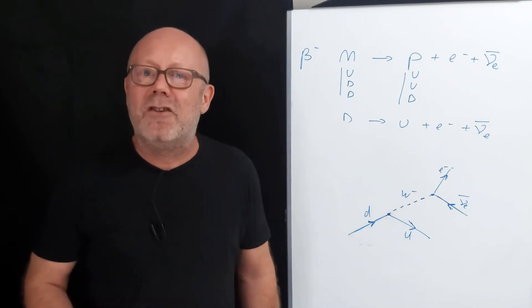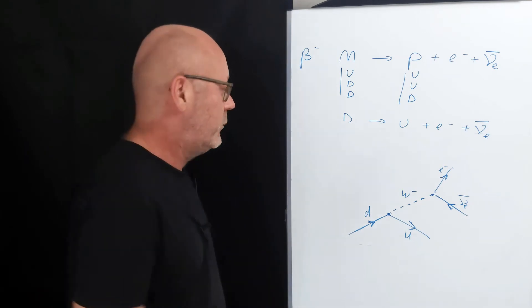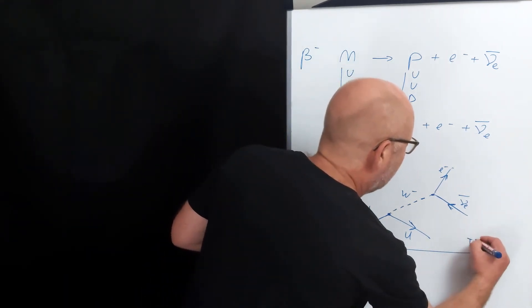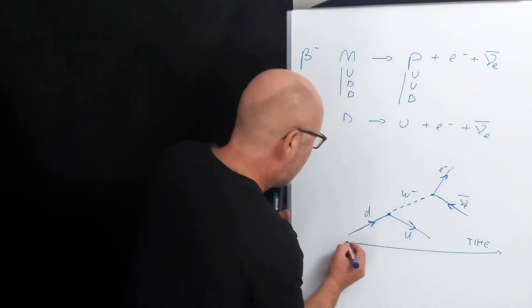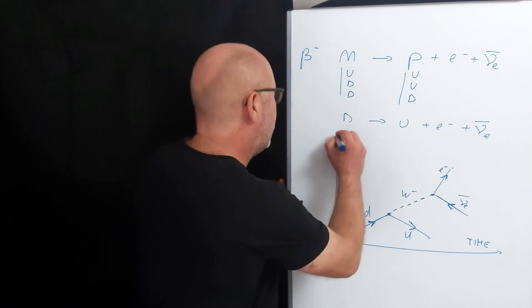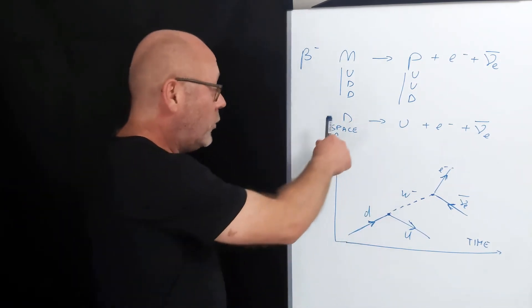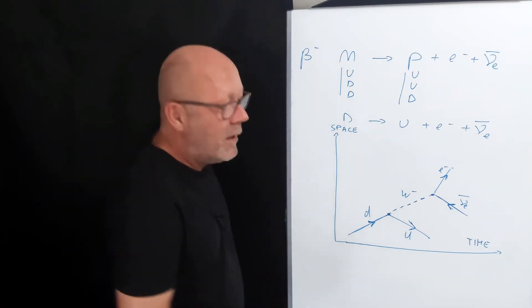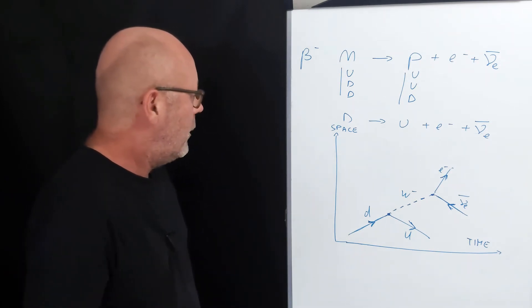A Feynman representation is a graphical representation, so we need some axes. From left to right, the axis is time. This shows the flow of time. And on the vertical side, we have space. All space is represented as one dimension. So you can see this, if you want, as the magnitude of the displacement.